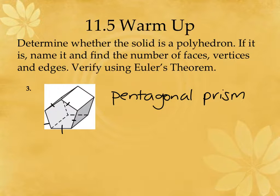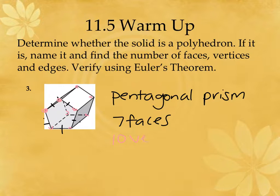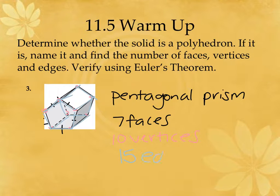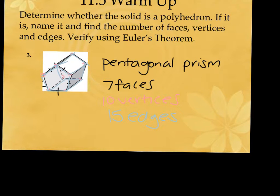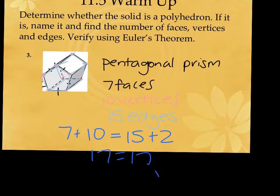How many faces? Seven — five around the sides, plus the front and back. How many vertices? Ten — five on the front and five on the back. How many edges? Fifteen — ten around the two pentagonal faces and five connecting them. Euler's theorem: seven plus ten should equal fifteen plus two — seventeen equals seventeen — so we know we've done it correctly.